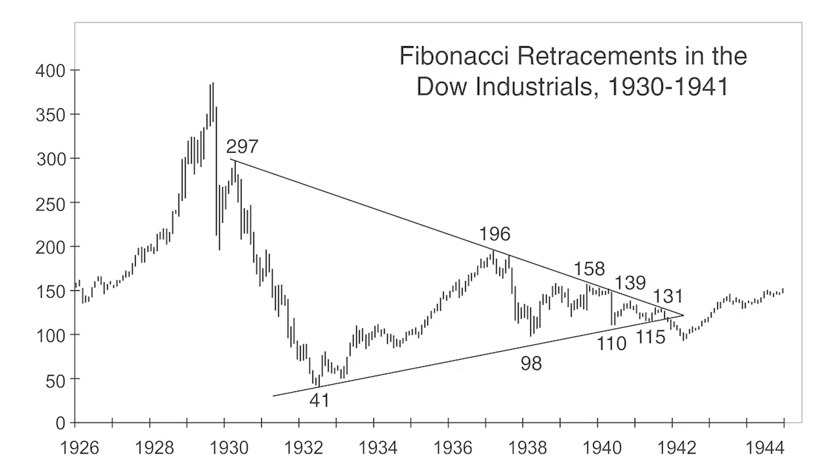Those Fibonacci ratios are 2.618, 1.618, 1.00, 0.618, and 0.382.